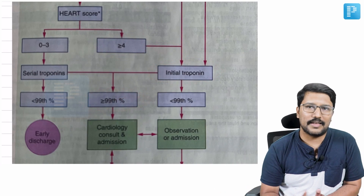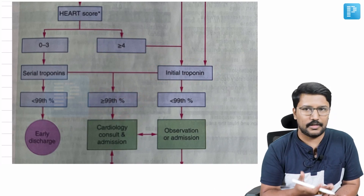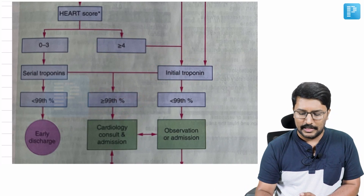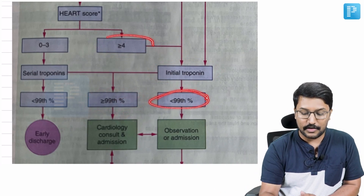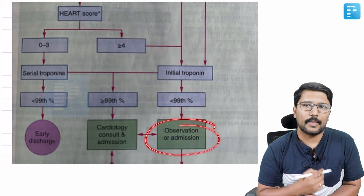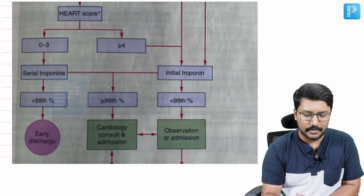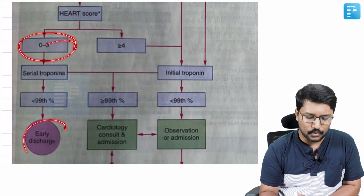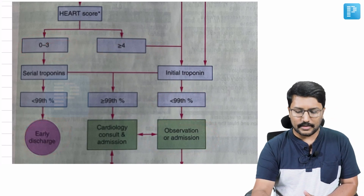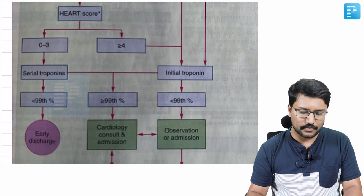If the HEART score is 4 or more, it is highly leaning towards acute coronary syndrome. If the initial troponin is more than the 99th percentile, you are more certain of ACS and a cardiologist should be called in for further management. If troponin is less than the 99th percentile with a HEART score of 4 or more, you hospitalize for further observation. This summarizes the approach to a case of chest pain.